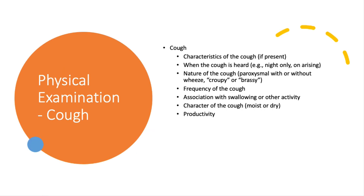When the child has a cough, we want to know a lot more than just the fact that they have a cough. We want to know what it sounds like, when they are coughing, how frequently they are coughing, and when they started coughing. A good example of this is asthmatics, who usually only cough at night or with physical activity. We also want to know if it is a dry or a wet cough, and whether they are coughing anything up.